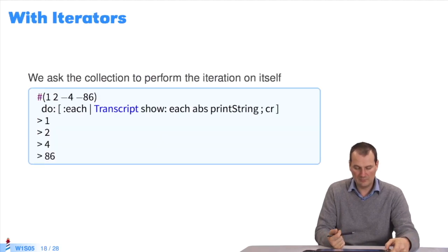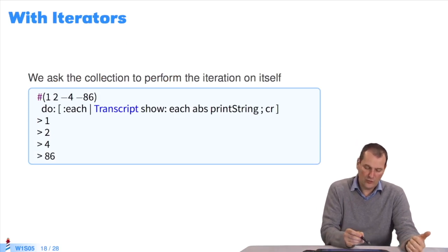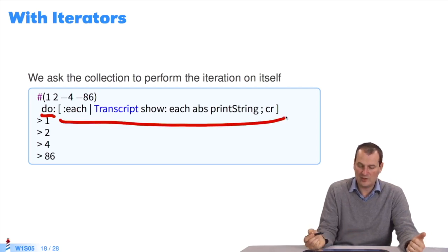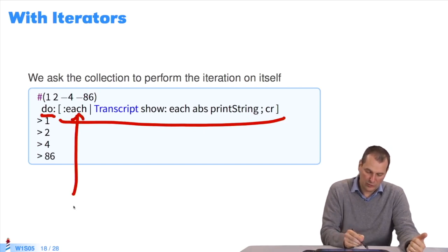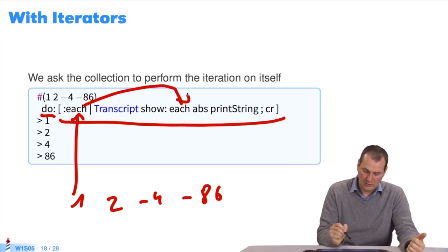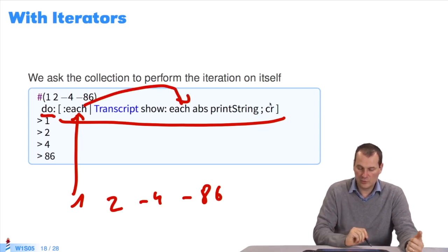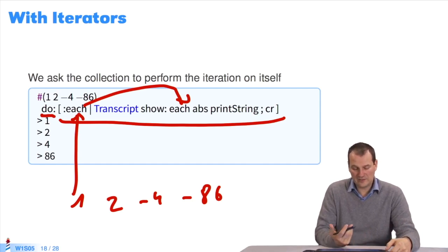You also have iterators. Iterators are different. I send the message do to the collection, saying what I want to apply to each of the elements. So the each — the argument of my function — will take as value 1, 2, negative 4, and negative 86. What I do here is that for each, I apply the absolute value and display it. Iterators are something you get in Java 8, and they're part of the core of Faro.